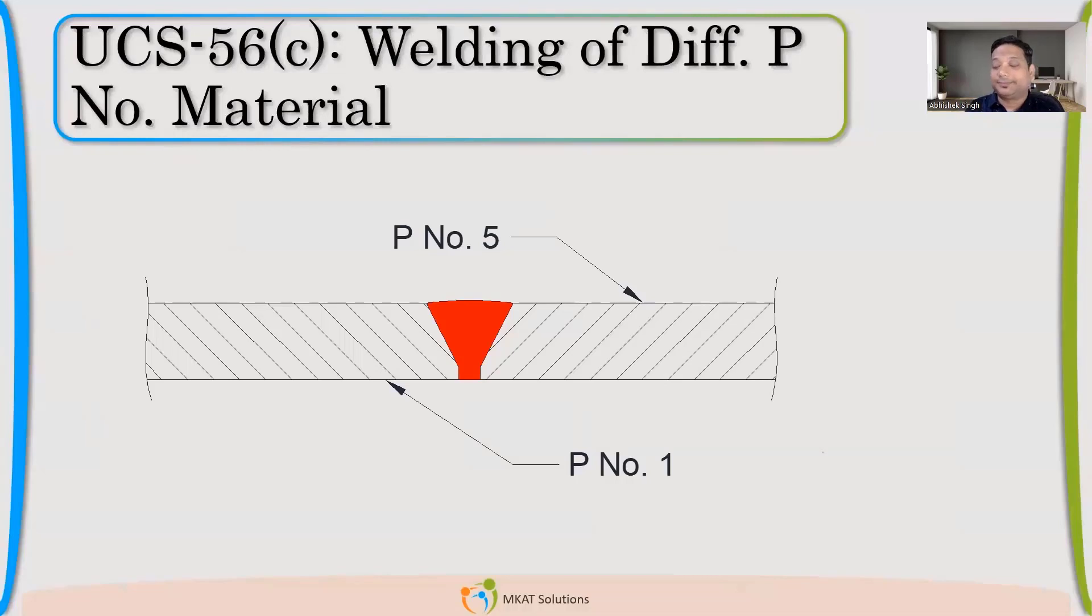Now, another question. You have different P numbers getting welded together. How you will give that heat treatment cycle? Which cycle I will follow? Whether I will go for P number 5 or P number 1? If I am welding two different P numbers. Akash is saying more stringent one. We need to refer QW283, stringent one.